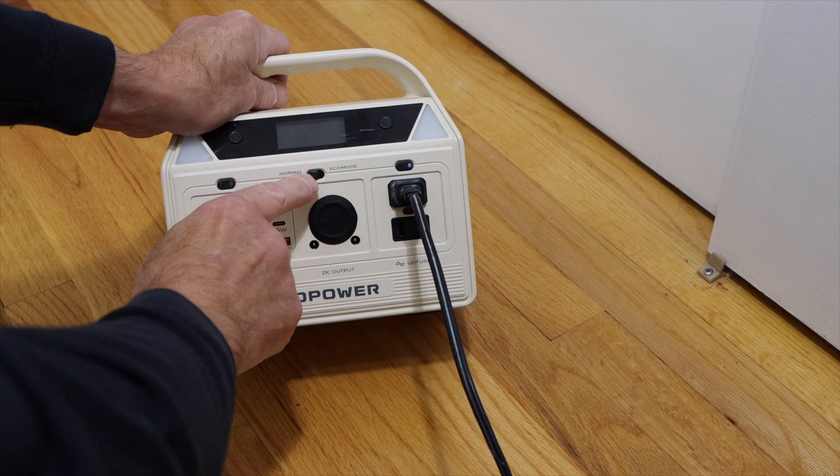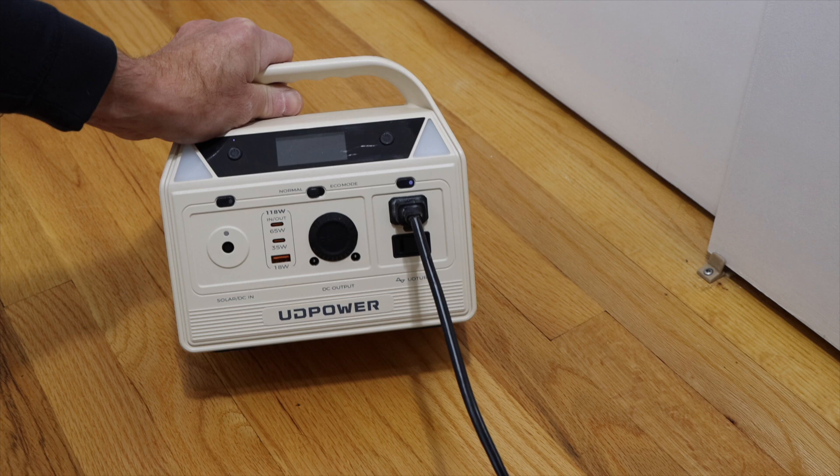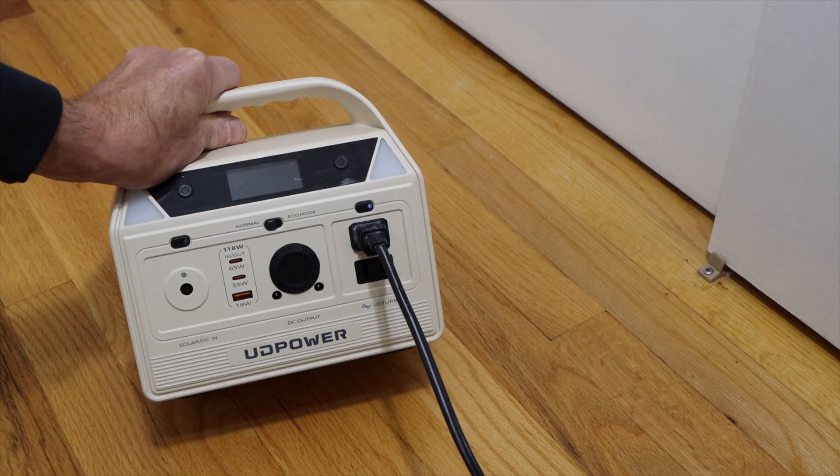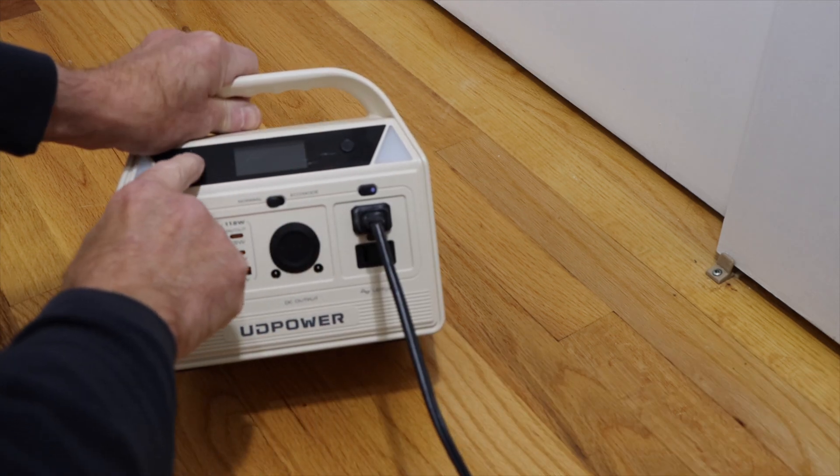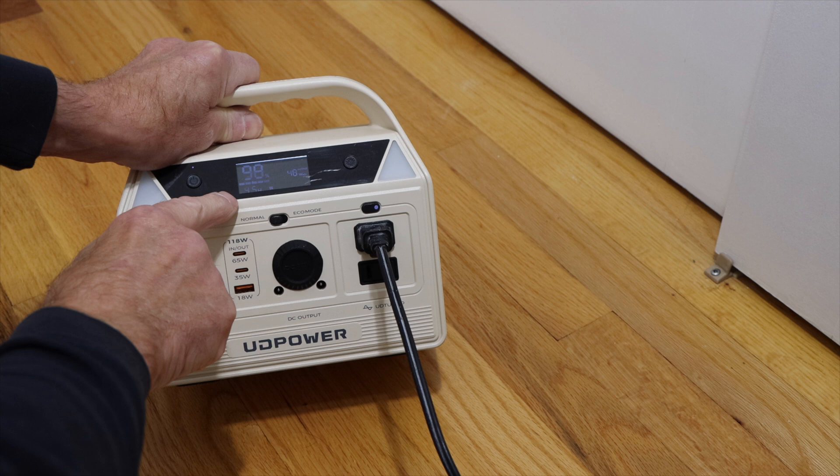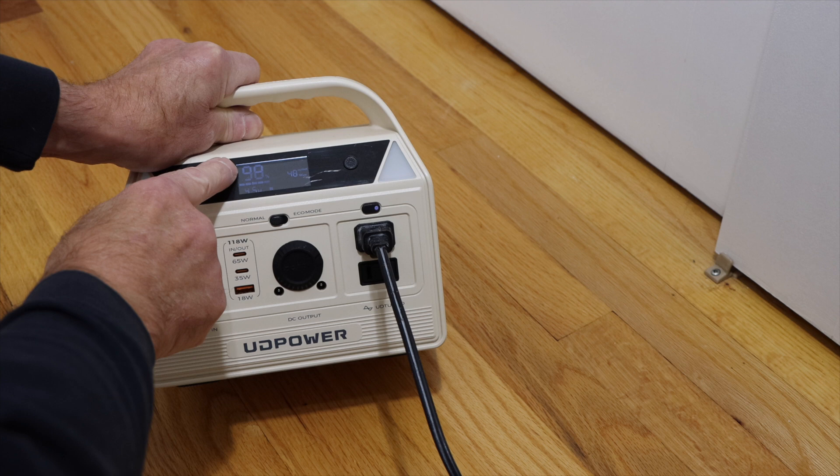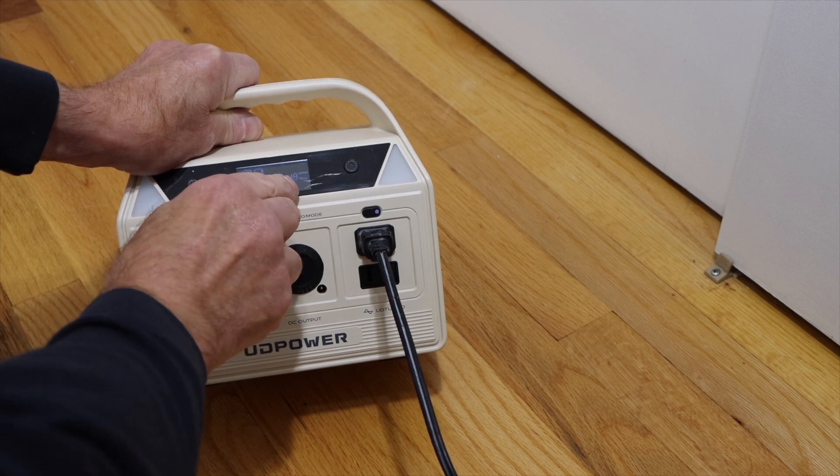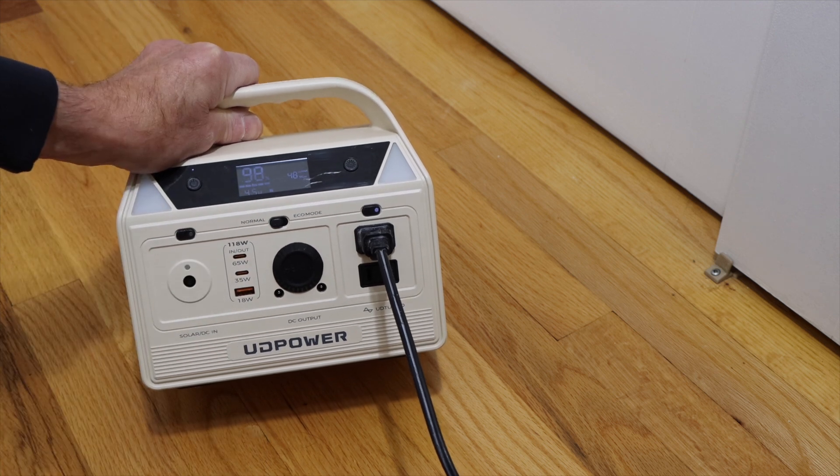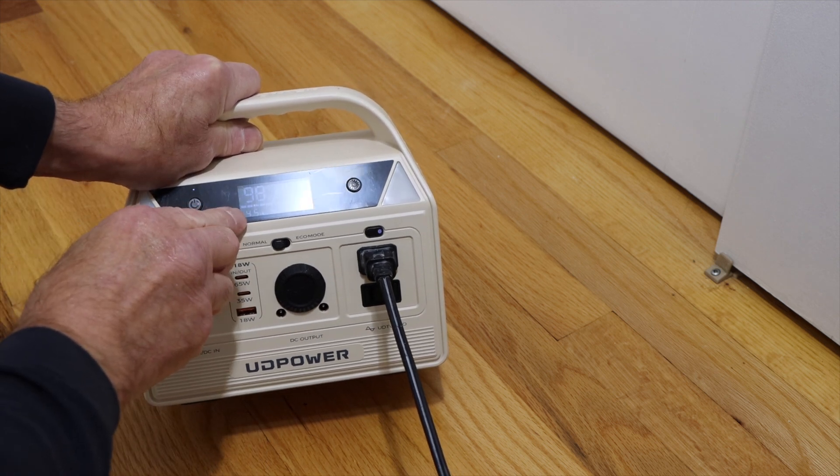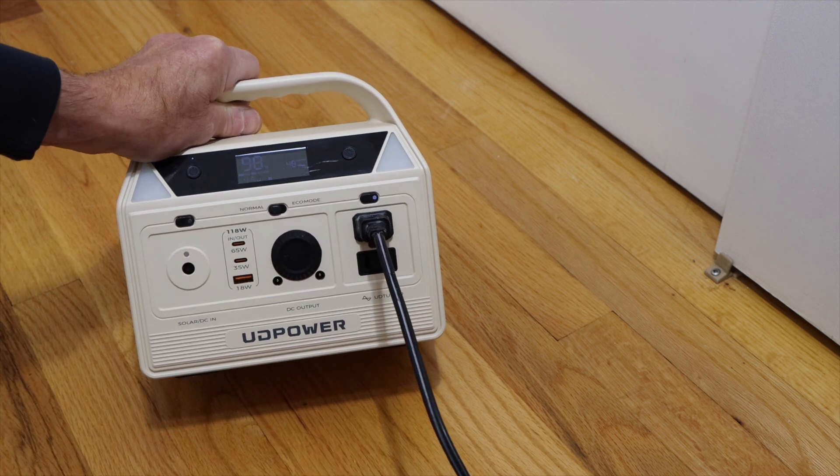It does have an eco mode right here. We can charge the unit by plugging it into a regular household outlet, a regular outlet at home. But what I like about it is that if you press this here, you can see how much charge is in the battery pack itself. It's 98% and we have 48 watts being used right now. And the 48 watts is because I have a very bright light that I'm using and it'll run for 4.5 hours on this particular light.